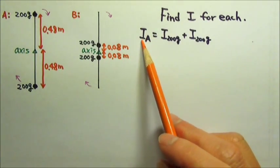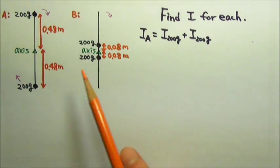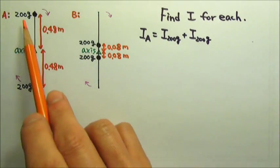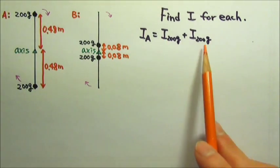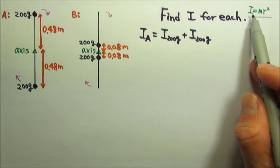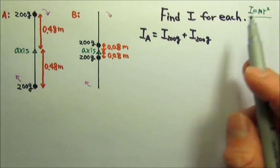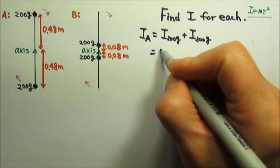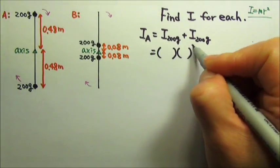The total I for this combination is the rotational inertia of this 200-grams plus the rotational inertia for that 200-grams. The rotational inertia of a point mass is mr squared, so this will be mr squared.